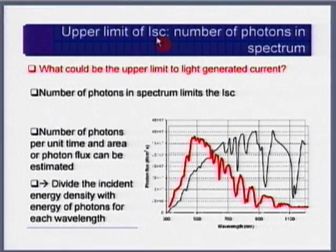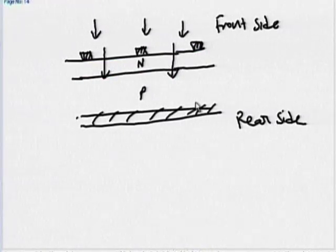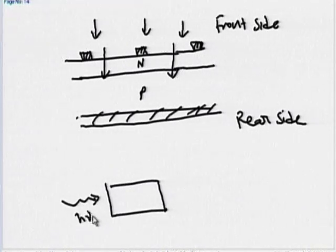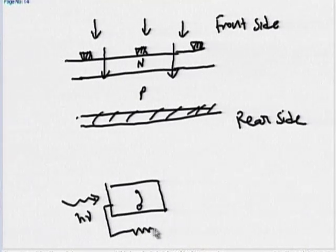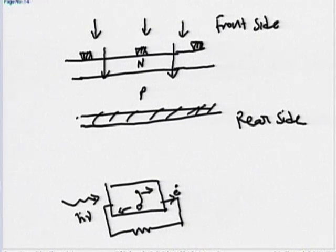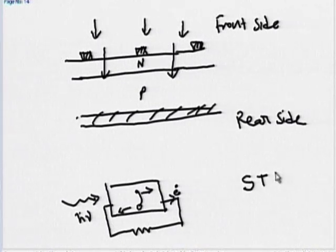In a solar cell, a photon falls on it with energy hν and gives one electron-hole pair. If everything goes well with no recombination, for one photon, one electron comes out. The rate of flow of electrons is current. To find the highest value of current, we need to know how many photons are in our spectrum — specifically under standard test conditions: air mass 1.5 G at 1000 W/m².